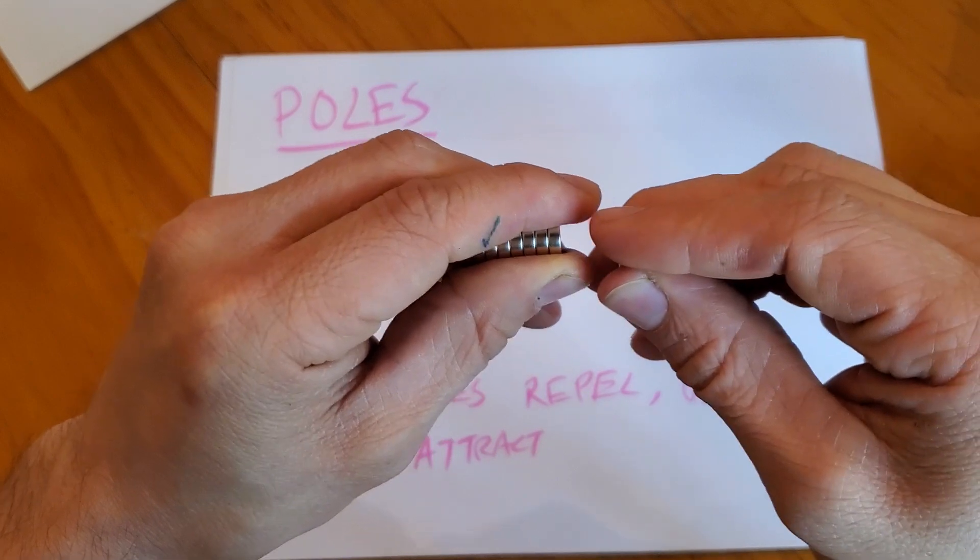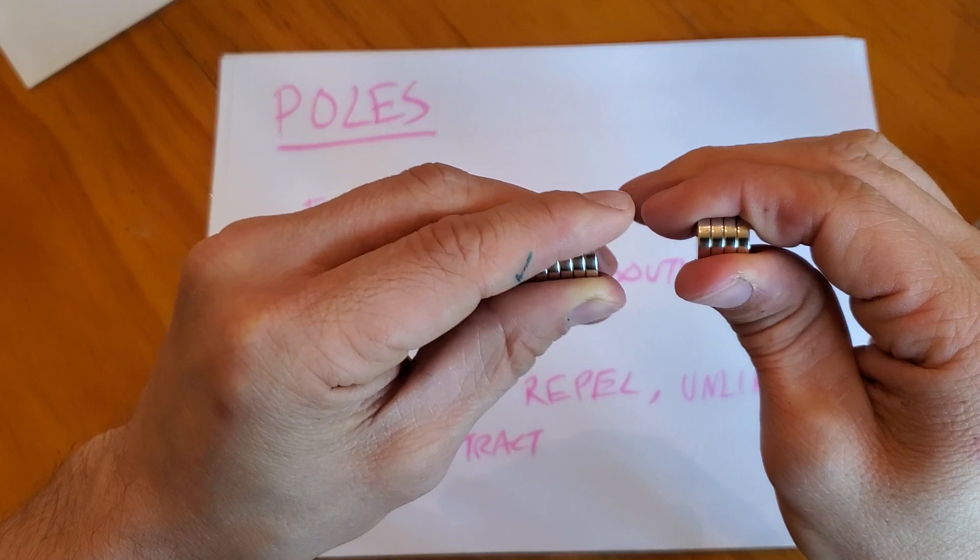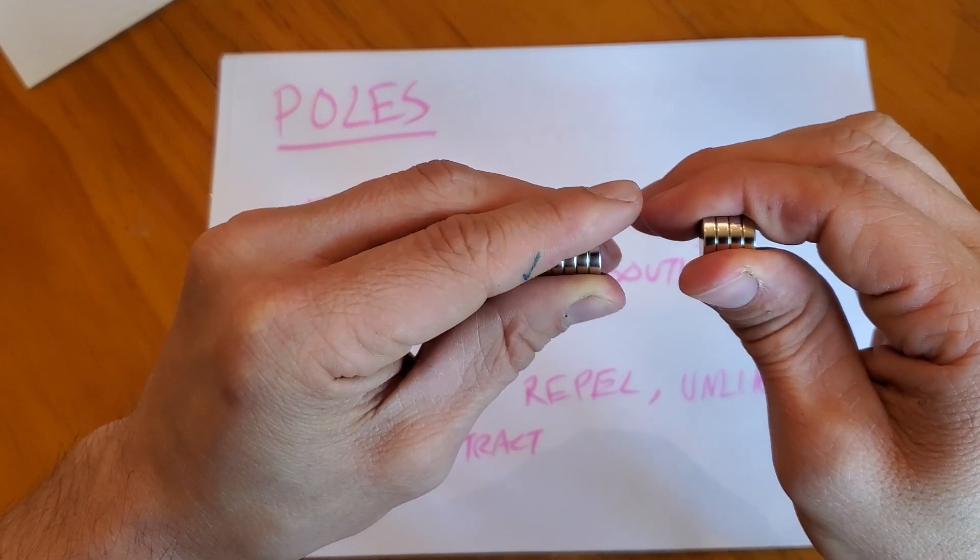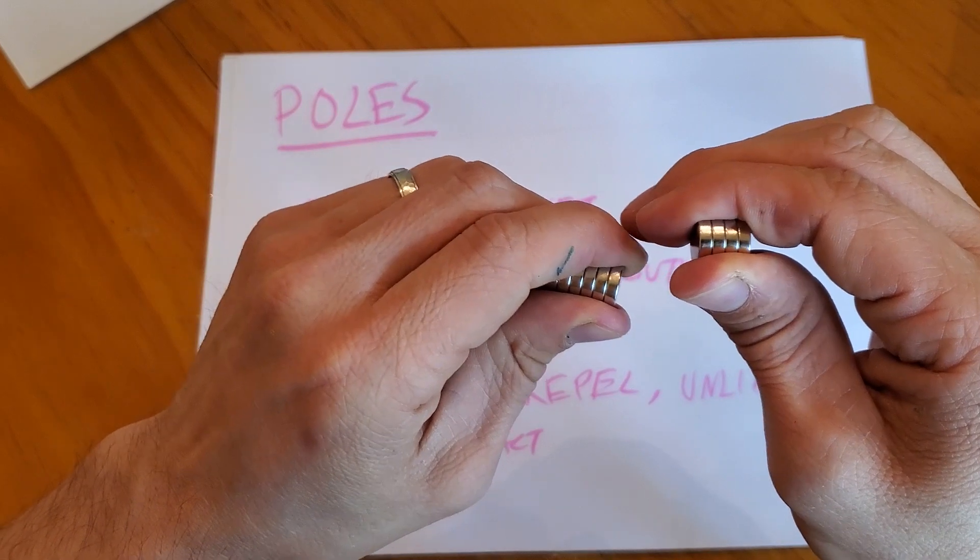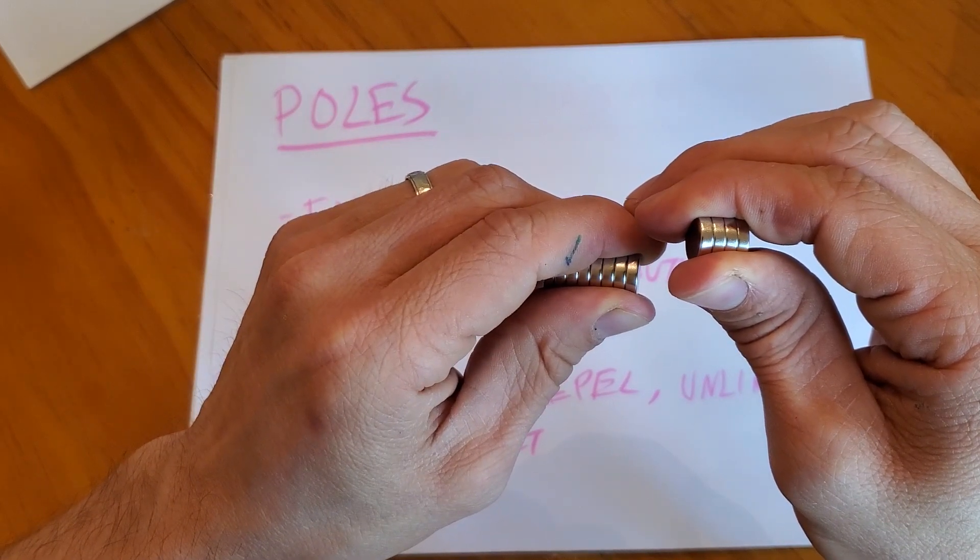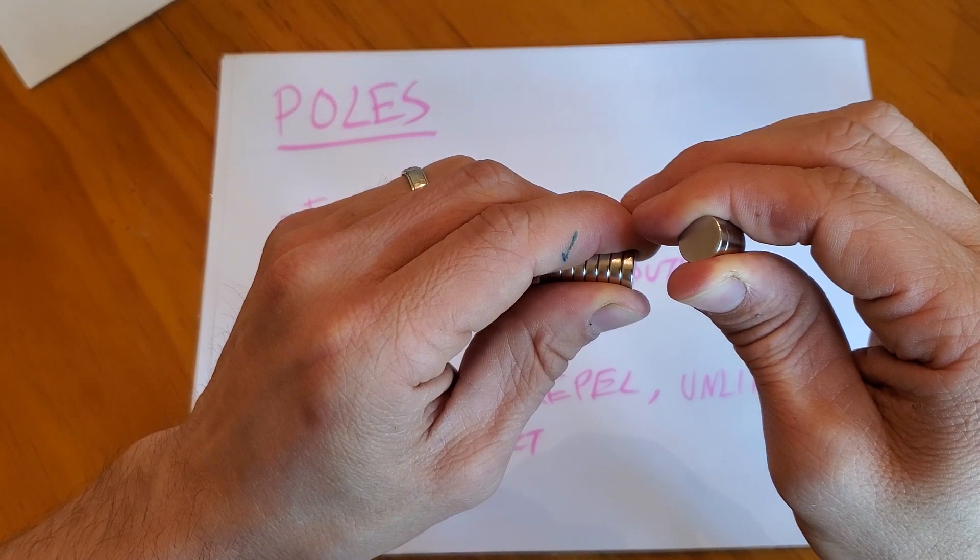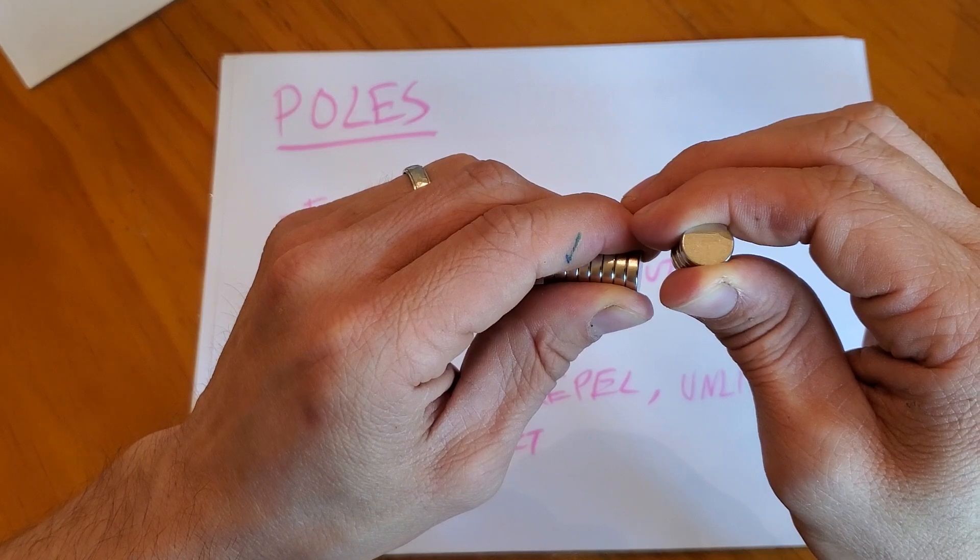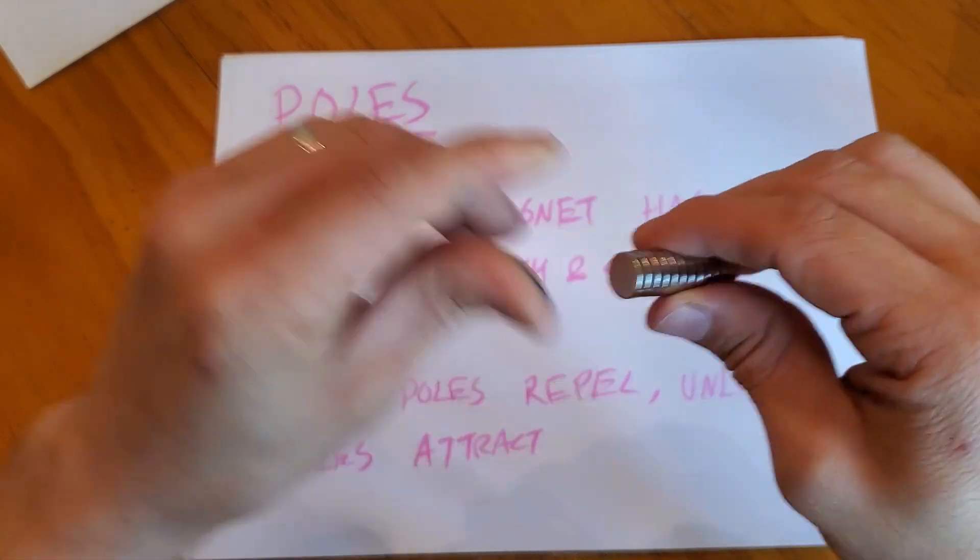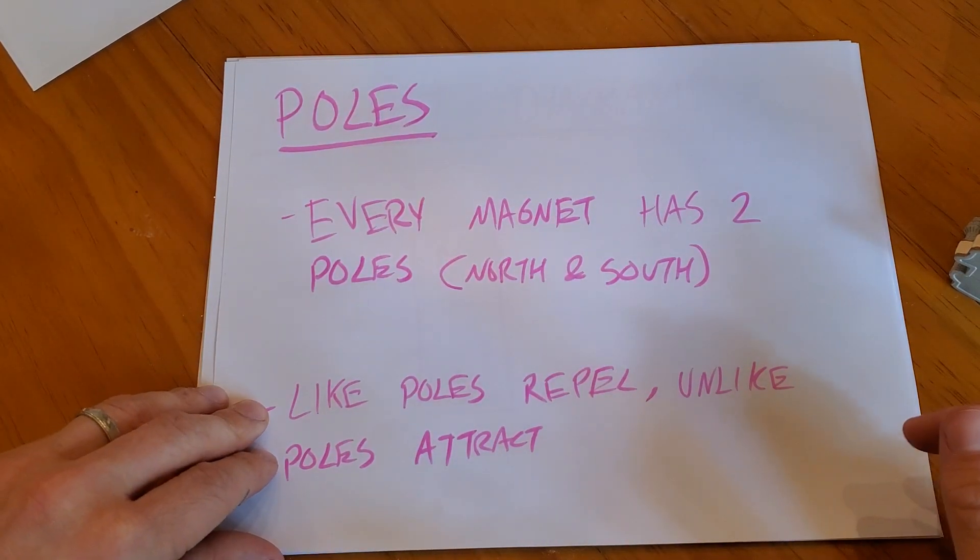I want to show you just how strong these are. These want to repel, but I'm just going to move some of these around and watch the ones in my right hand. As I move these ones around, it's going to spin the ones in my right hand so they can attract each other. That is not me doing that. That is all the magnets trying to attract themselves back to each other. Like poles repel, opposite or unlike poles attract.